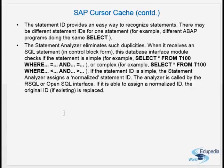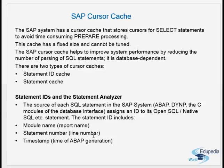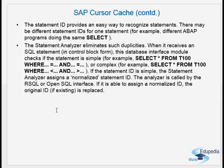The statement ID provides an easy way to recognize statements. There may be different statement IDs for one statement — for example, different ABAP programs doing the same select. Since the statement ID includes the report name, line number, and timestamp, the same SQL statement can be used in different ABAP reports, meaning one SQL statement can have many different statement IDs.